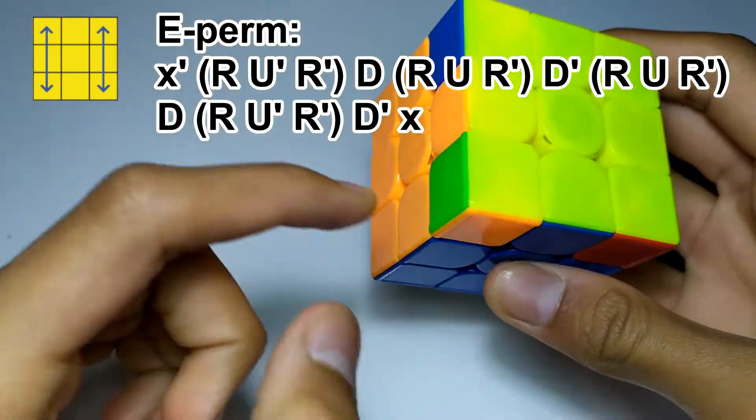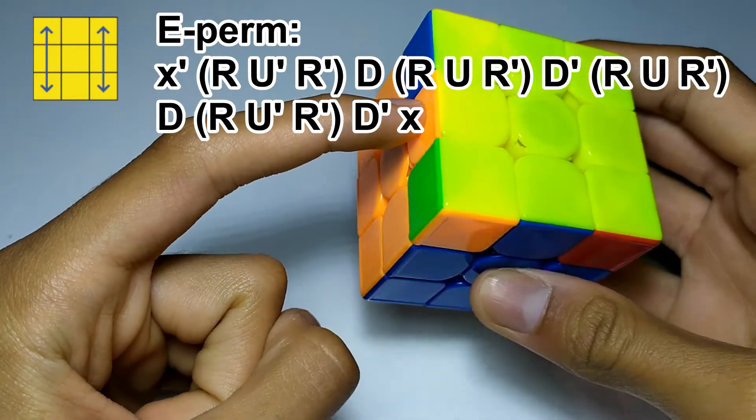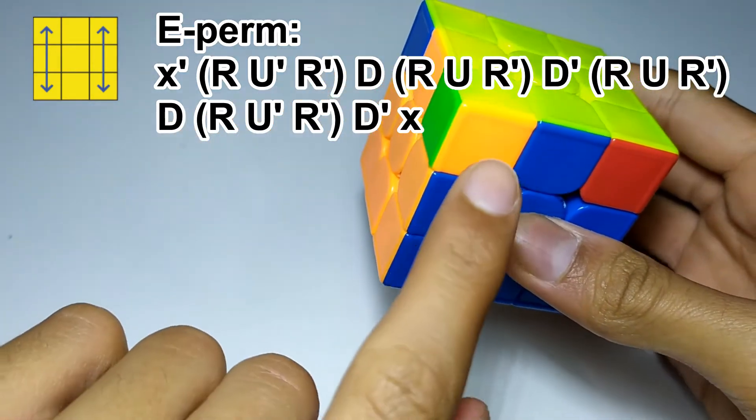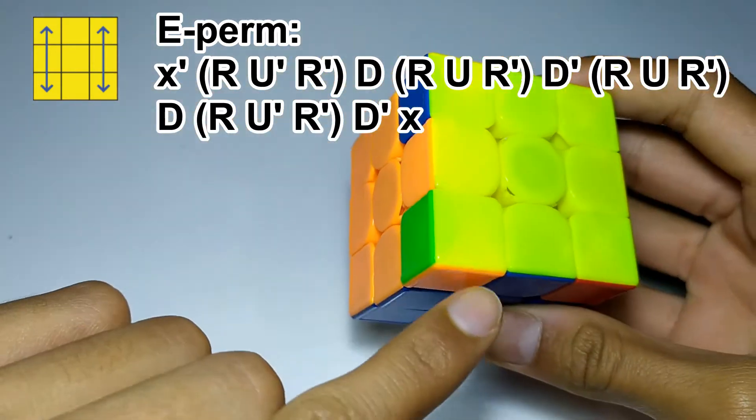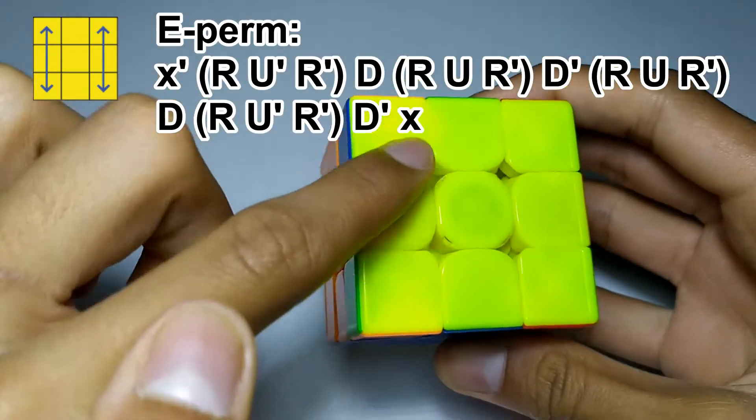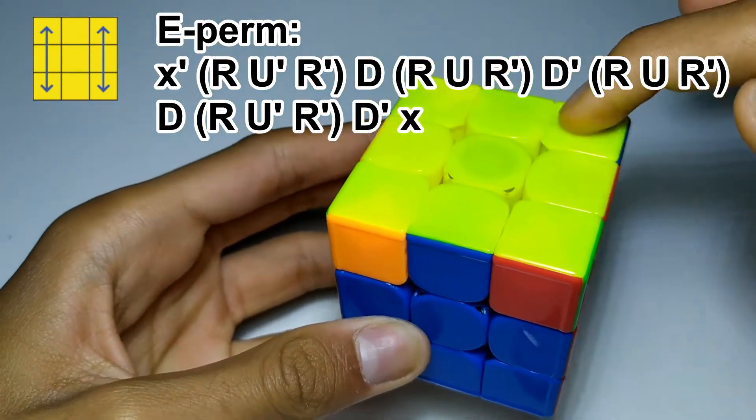Another way to recognize that is by looking at this color on the side of the edge so this is orange and you can see that these two stickers are orange which means that these two corners need to swap and therefore these two corners need to swap.